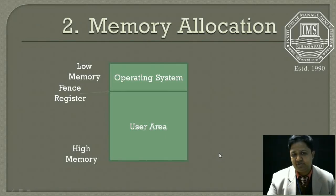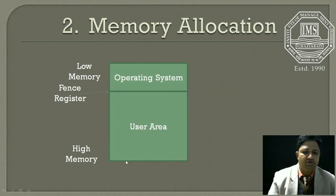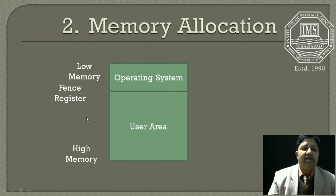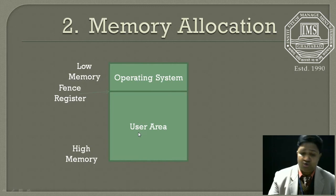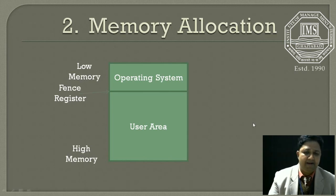We can understand this with the help of a figure. Main memory is divided into two main parts: number one is the operating system which resides in low memory, while the user process area or user space area resides in high memory. There exists a fence register between the operating system and the user space area, so that user processes cannot change or interrupt the operating system.